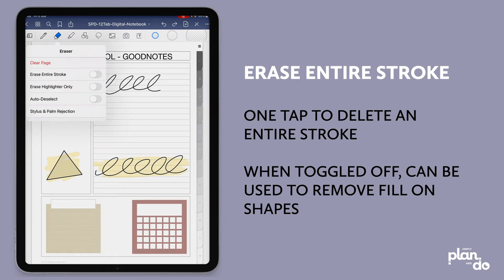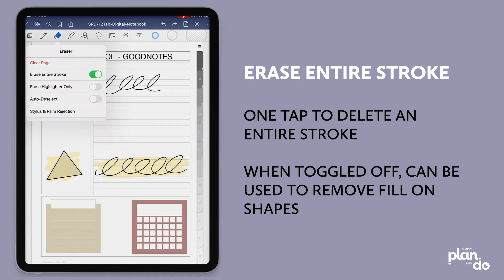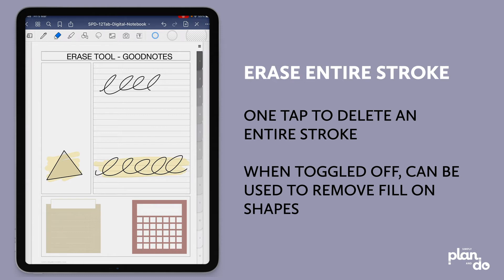If I tap and hold the eraser again and switch erase entire stroke back on, this time if I just touch the very edge of my eraser and tap, you see how it disappears completely. All I have to do is tap anywhere on that continuous line for it to disappear. If every time you touch things they disappear, make sure you come in and switch that off so you can go back and just delete the detail. You can also use this to your benefit if you've used the shape tool and drawn a shape but didn't turn the fill off.